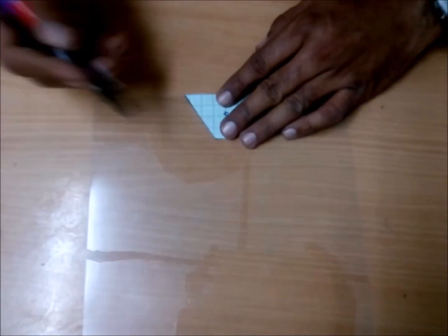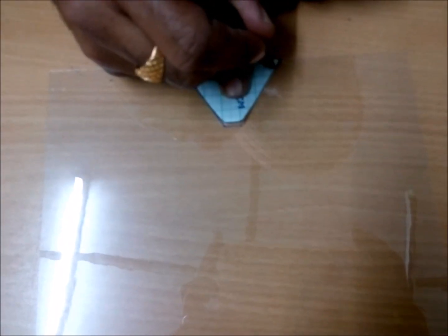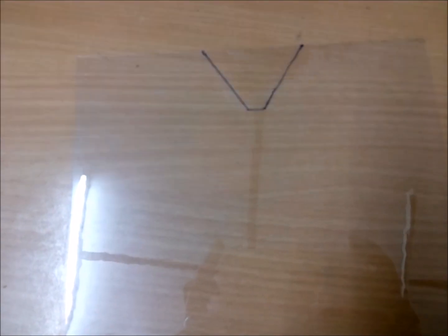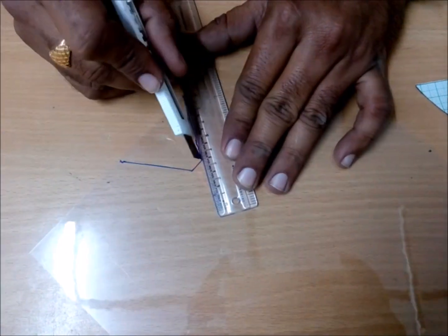Place this graph paper on the transparent sheet and draw the outer lines of the trapezoid. Now cut this trapezoid with the help of cutter or scissor.